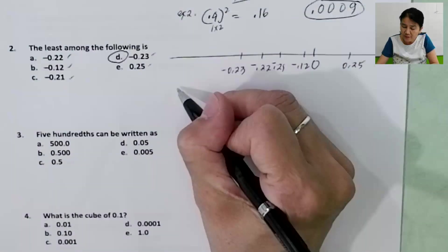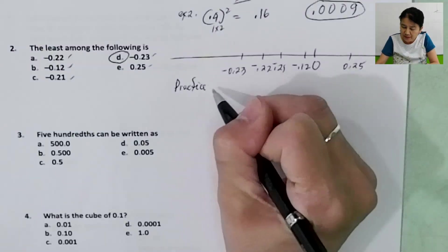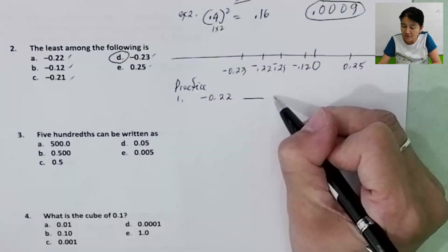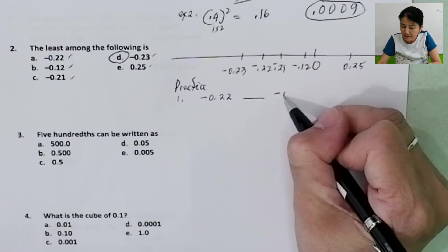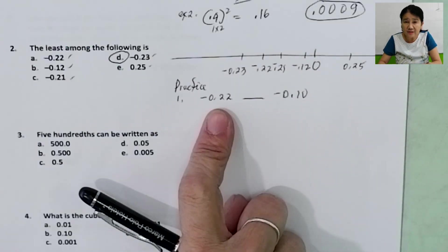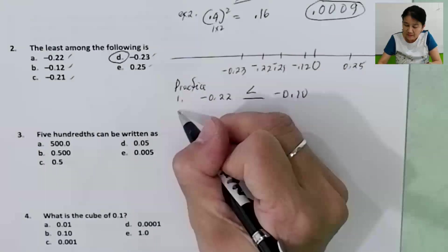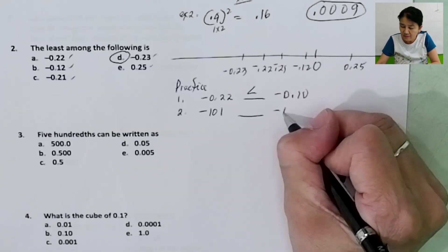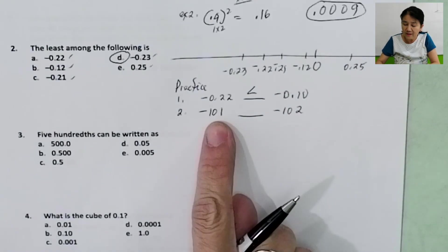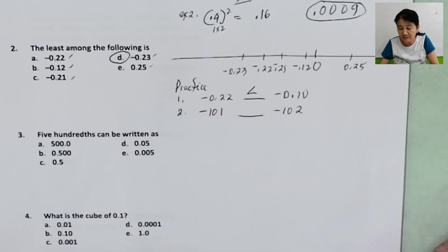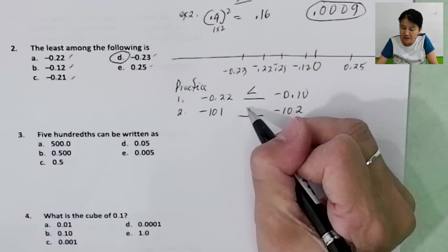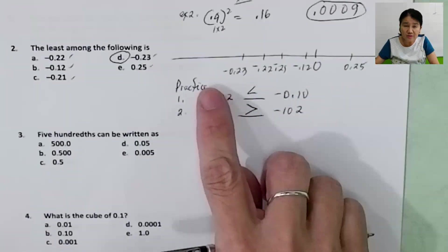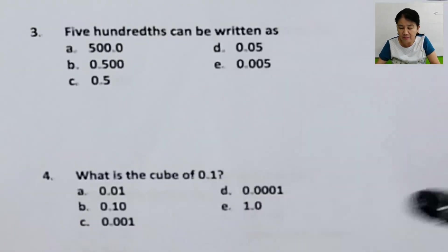Let me give you some practice. Negative 0.22 — what is its relation to negative 0.10? Negative 0.22 is on the left side, so it must be less. What about negative 0.101 versus negative 0.102? Negative 0.101 is to the right of negative 0.102, so negative 0.101 must be greater than negative 0.102. The rule: numbers to the left are always less than numbers to the right.